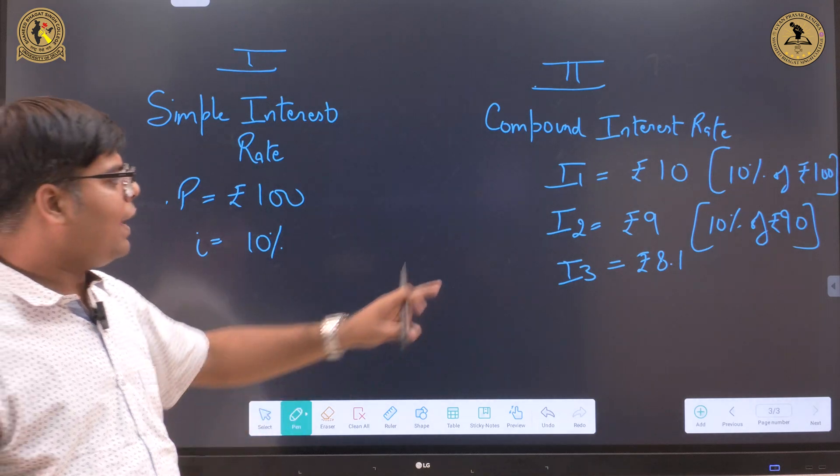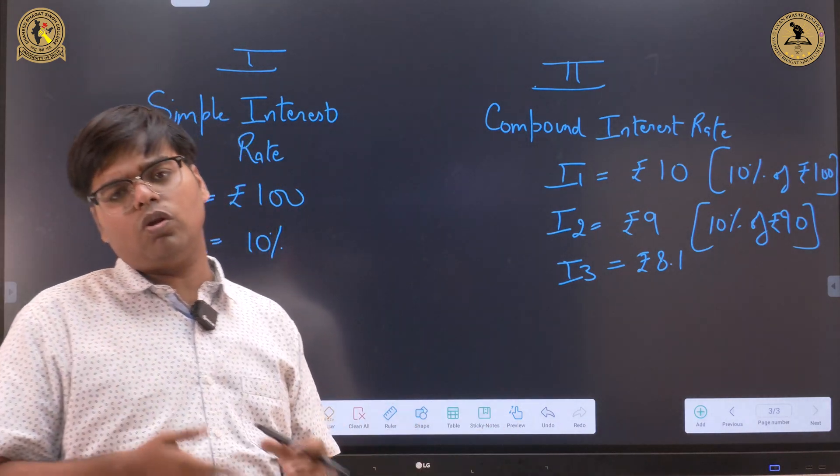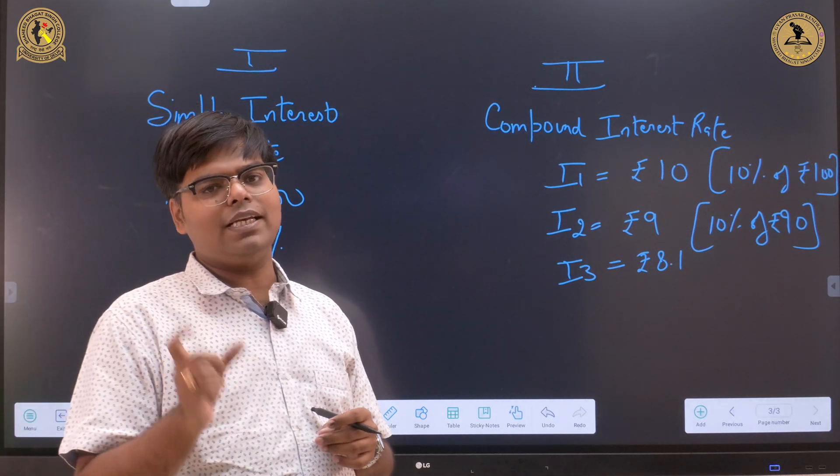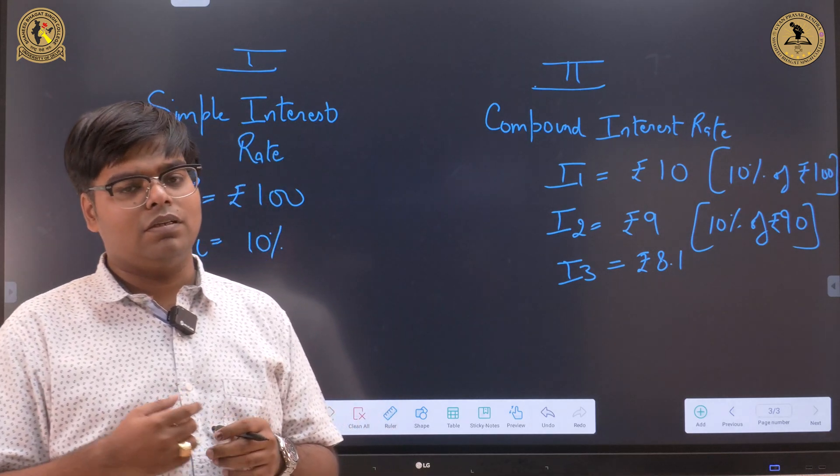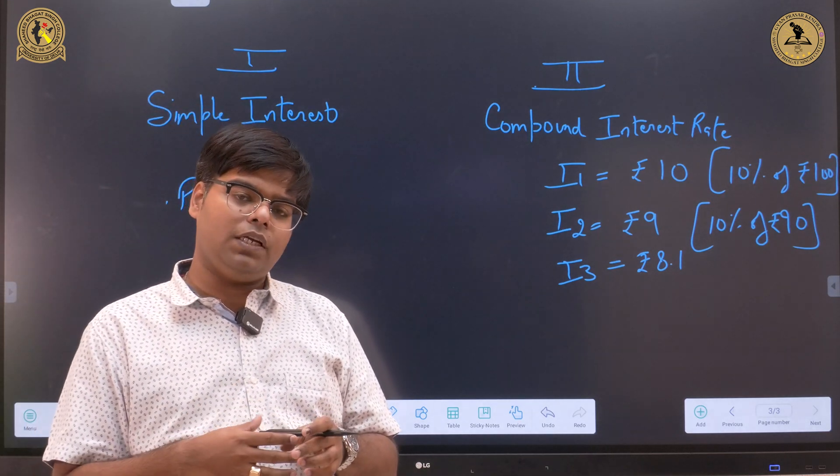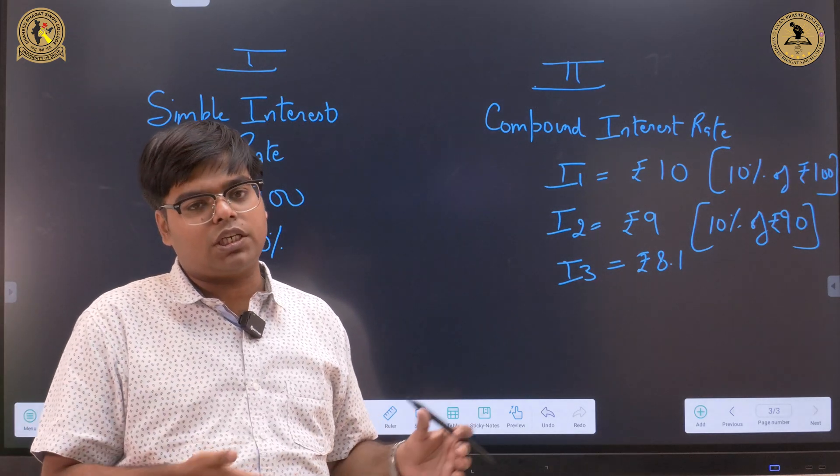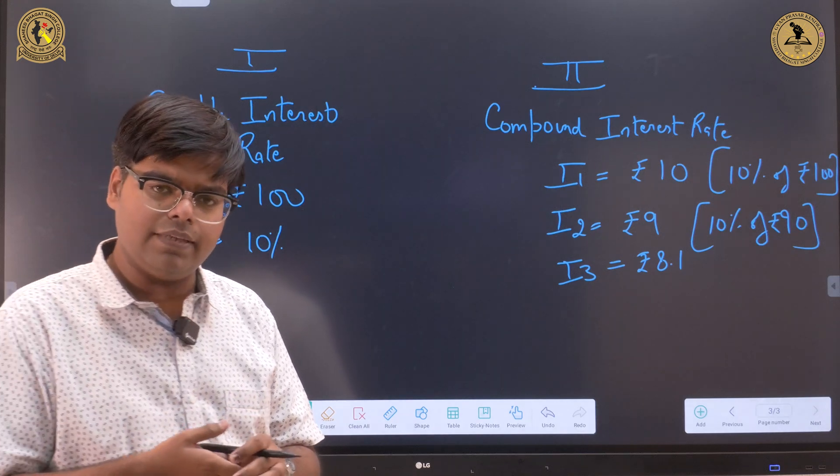So in case of compound interest rate, I can apply the rule of 72 to find out the time period in which my invested amount of 100 rupees will get double. This rule of 72 only gives you precise results when the interest rate comes up in a range of 5-12%. What does this mean?